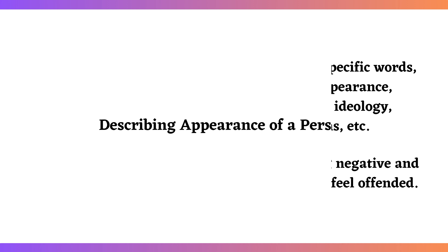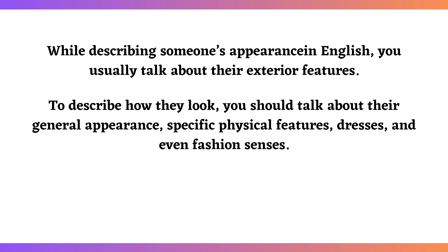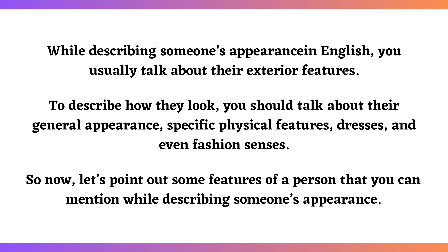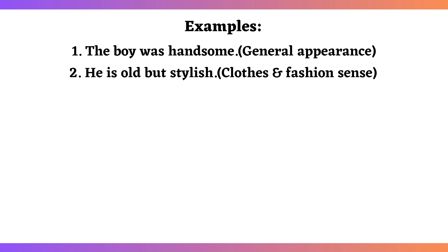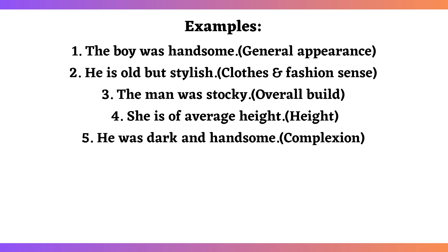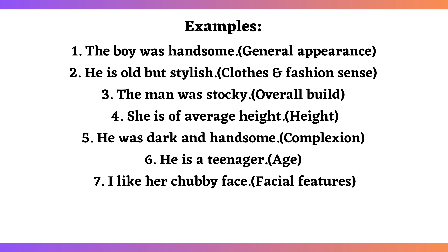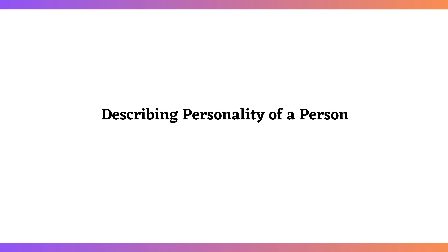Describing the appearance of a person: while describing someone's appearance in English, you usually talk about their exterior features. To describe how they look, you should talk about their general appearance, specific physical features, dresses, and even fashion senses. Examples: The boy was handsome. He is old but stylish. The man was stocky. She is of average height. He was dark and handsome. He is a teenager. I like her chubby face. She is a blonde. The wrestler had a full beard.